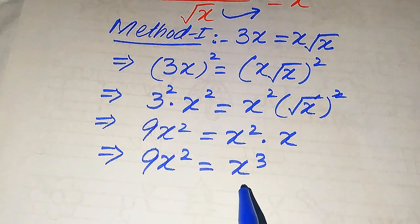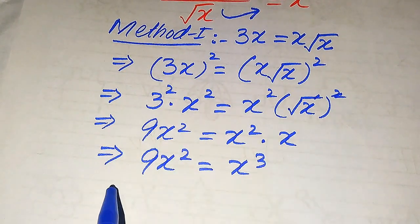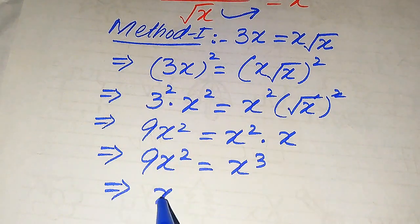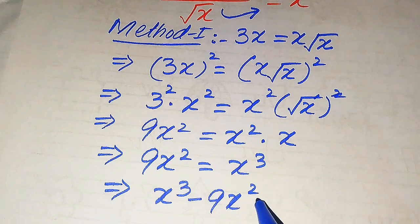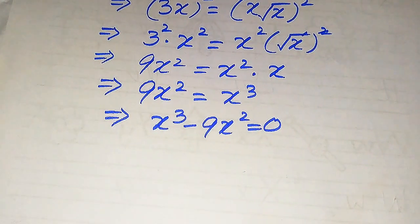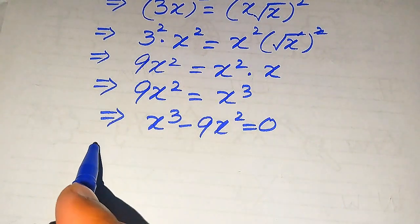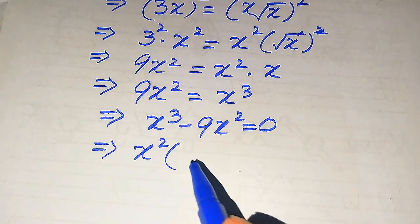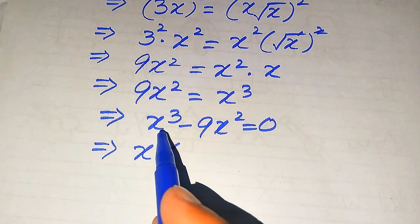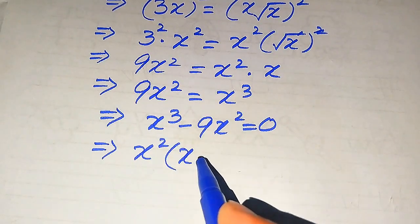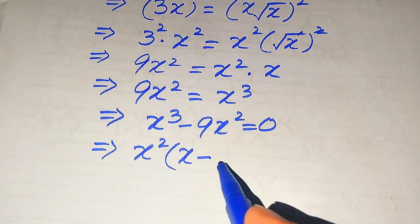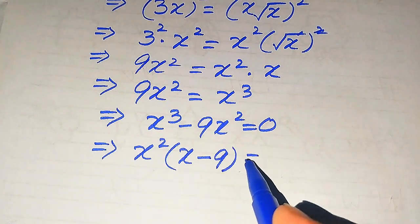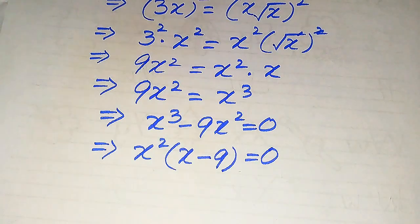So 9 times x squared equals x cubed. We move 9x squared to the right hand side, and it will be written as x cubed minus 9x squared equals 0. In the next step, both of these two terms involve x squared, so we take common x squared from here, and when we take common x squared we get the remaining value x minus 9, so the equation becomes x squared times x minus 9 equals 0.